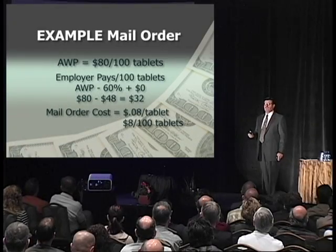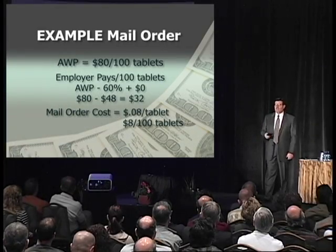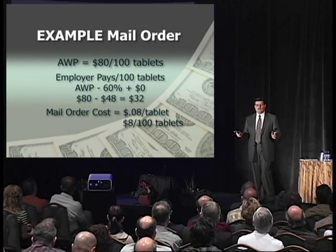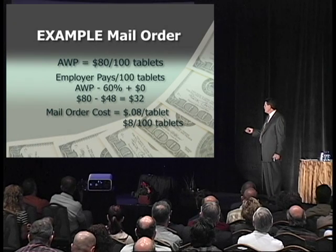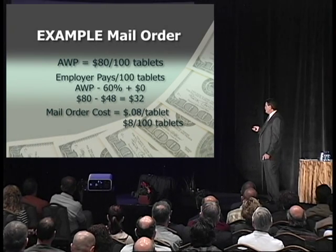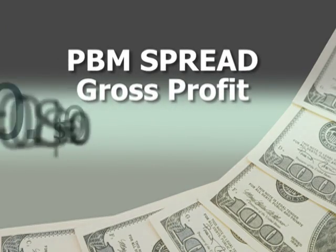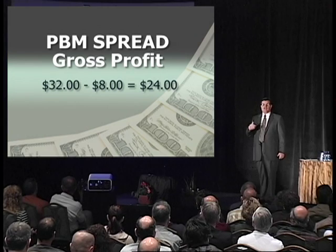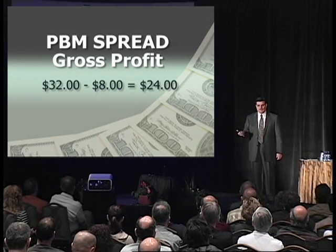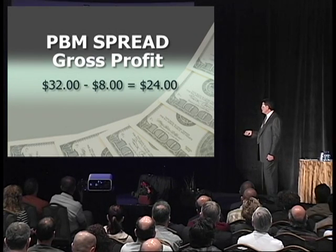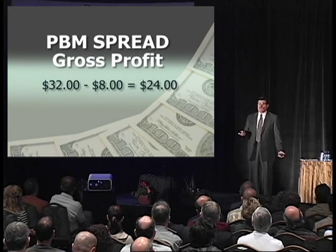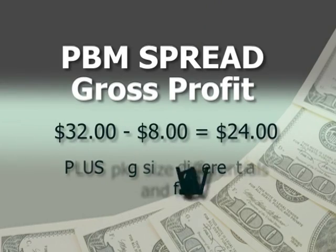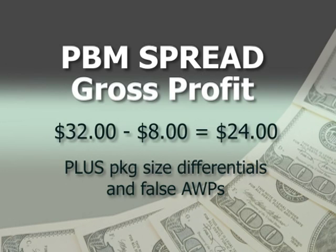I'll assume the mail order paid $0.08 a tablet just like the retail pharmacy did. If they paid $0.07 or $0.06 because they bought in volume, more power to them — that's the American way. So apples to apples at $0.08: it's a $32 prescription minus $8, so a $24 gross profit. Going back to what the retail pharmacy made — they had $8 cost and got paid $14, so $6 gross profit. The PBM made $24 on the same prescription through mail order. And we haven't even talked about the hidden games they play on the mail order side.